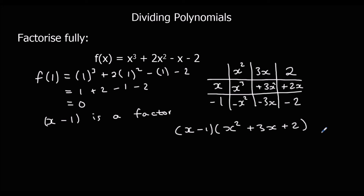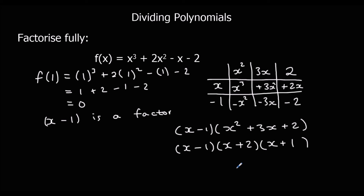So I've got (x-1)(x²+3x+2). That's factorized but not fully yet — I need to put the second bracket into two more brackets. What multiplies to make 2 and adds to make 3? It's 2 and 1. So fully factorized: (x-1)(x+2)(x+1).